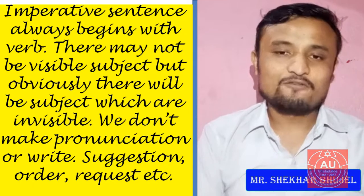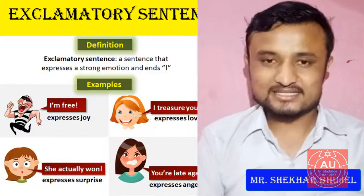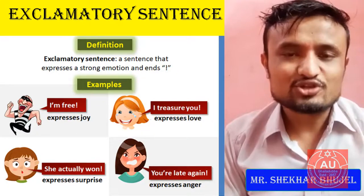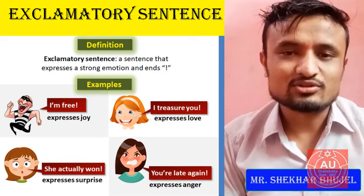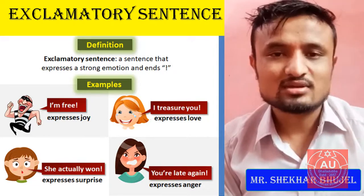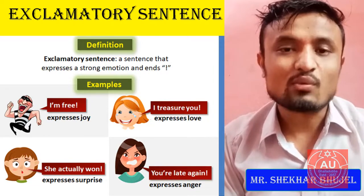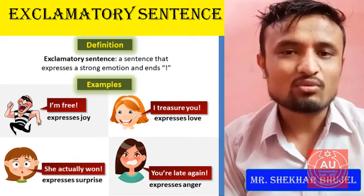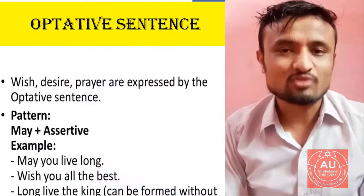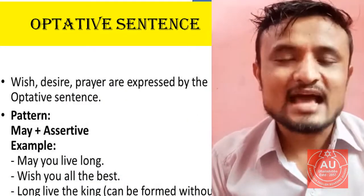The fourth type is the exclamatory sentence. It expresses sudden feelings and emotional feelings. For example: 'Wow, what a beautiful painting you did!' 'Wow, what a beautiful dress you brought!'